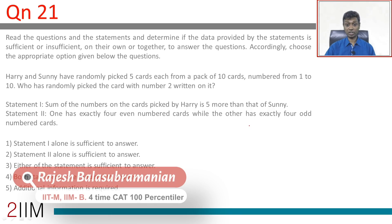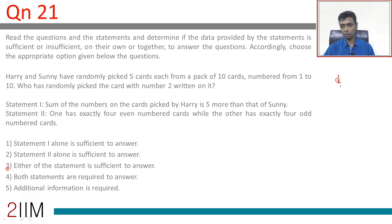This is a data sufficiency question. Let's read the question and then go to the two statements. Harry and Sonny have randomly picked five cards from a pack of ten cards numbered from one to ten: one, two, three, four, five, six, seven, eight, nine, ten. Who has picked a card with number two written on it?